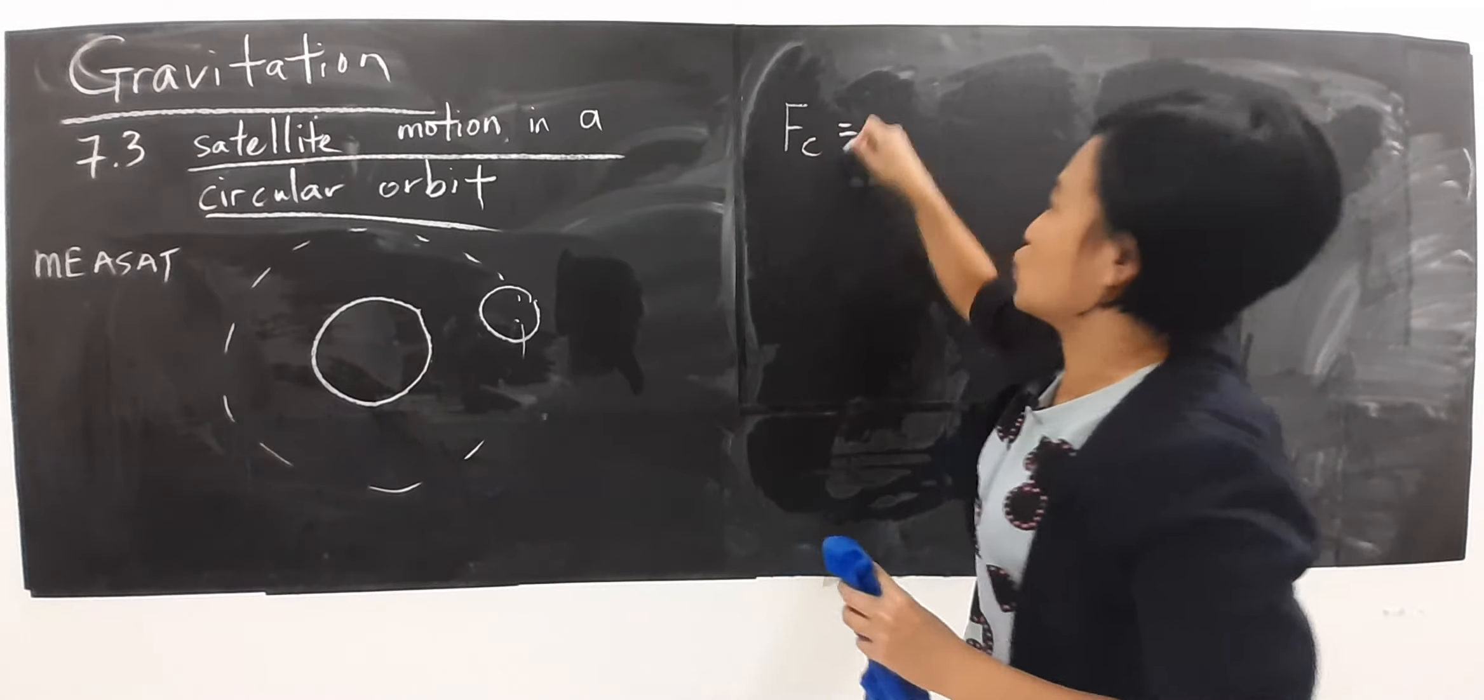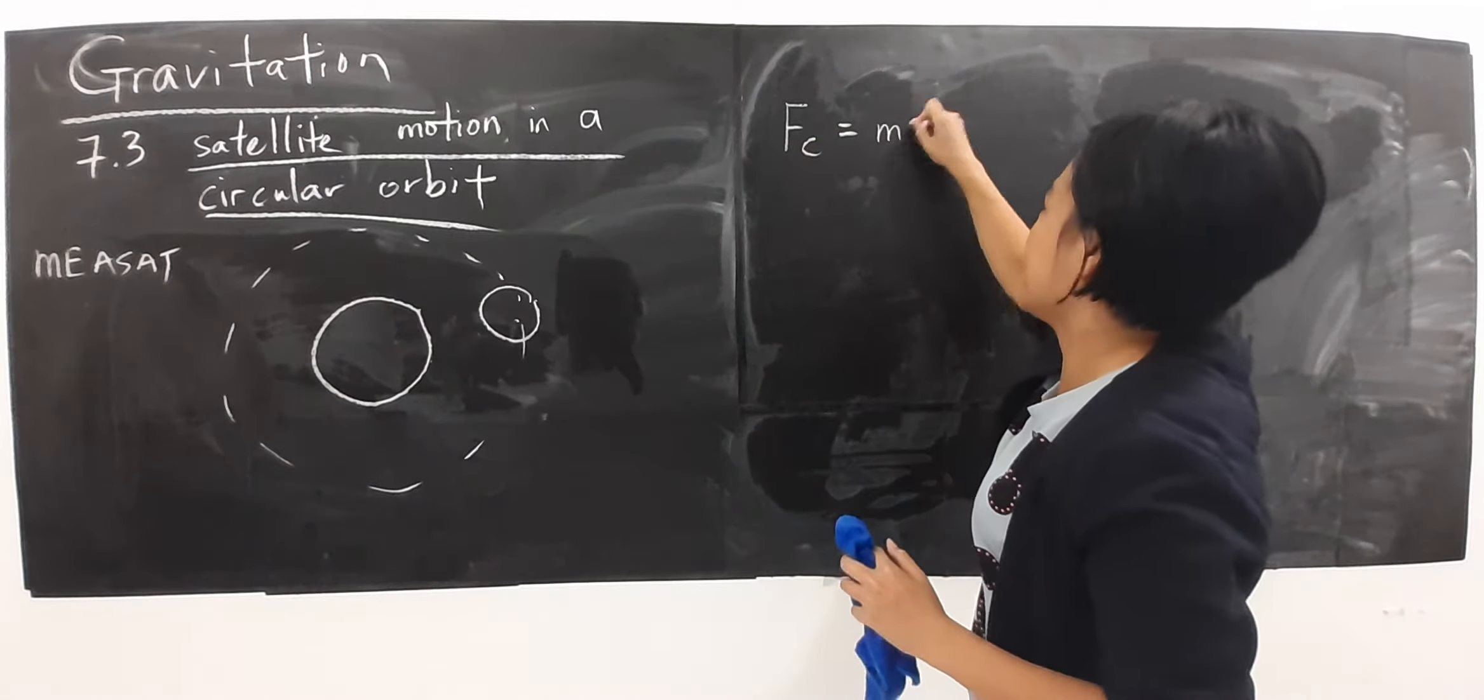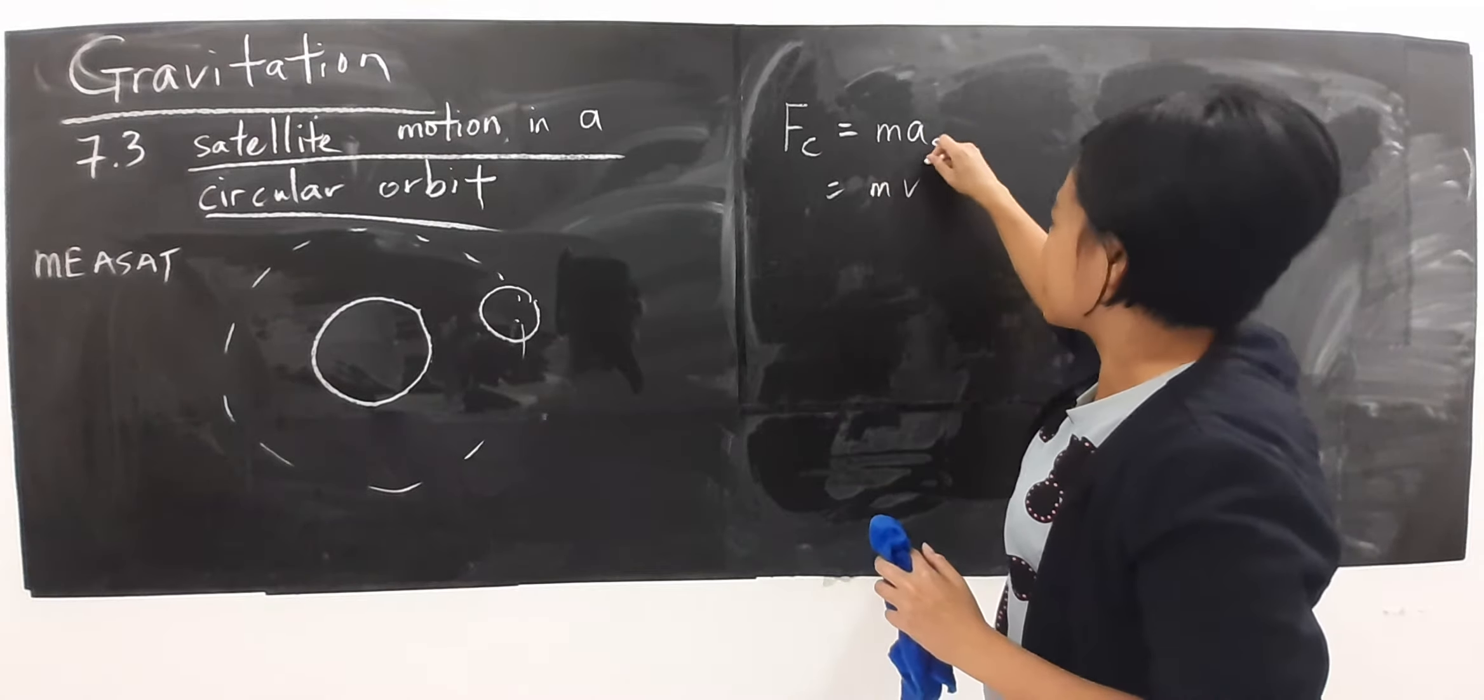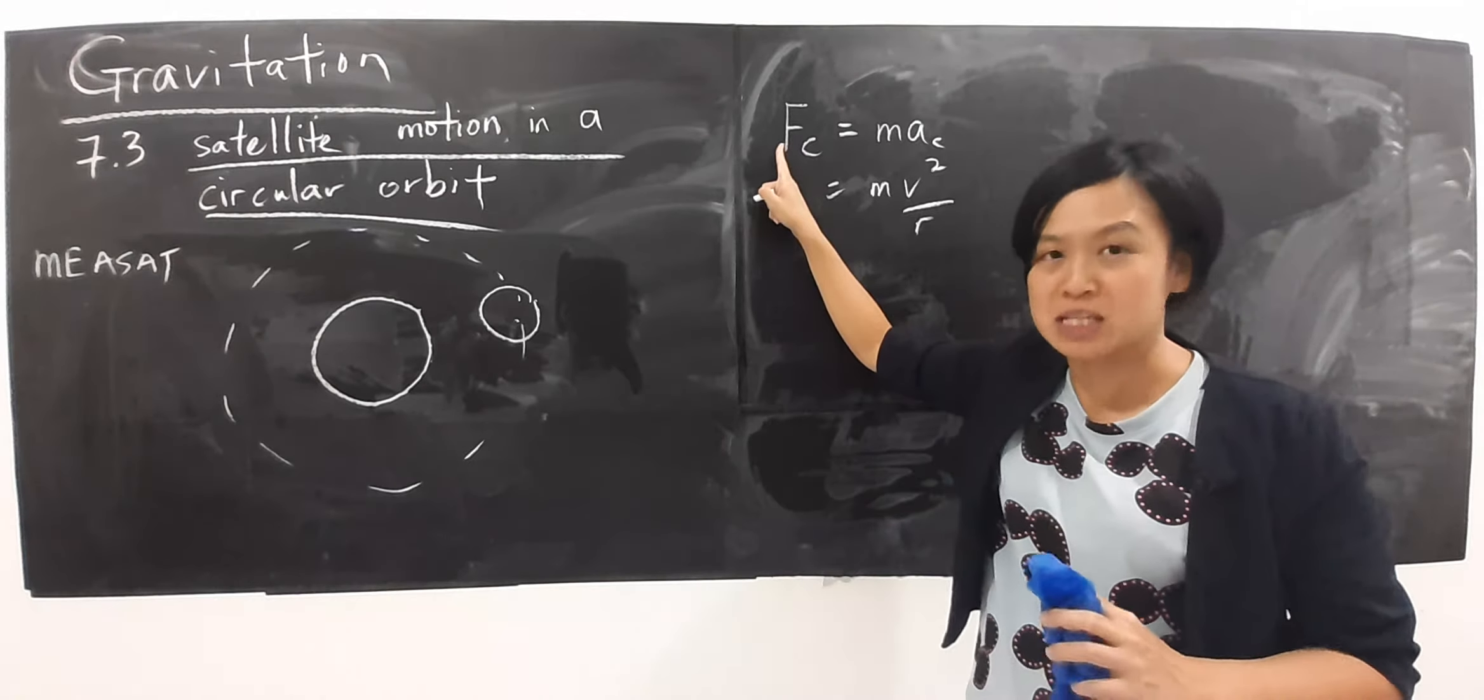So we are back to chapter 6. F actually equals to Ma. This a is actually, I can express it in v square over R. And what provides centripetal force here?